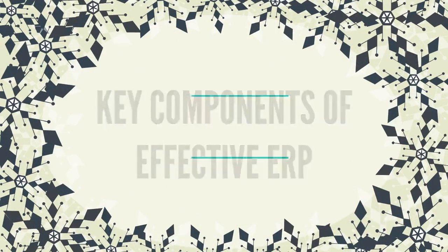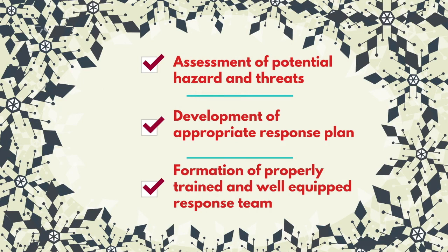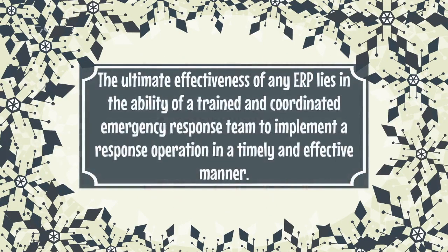The first key component of an emergency response plan is the assessment of potential hazards and threats. Secondly, the development of an appropriate response plan. Next is the formation of a properly trained and well-equipped response team. The ultimate effectiveness of any emergency response plan lies in the ability of a trained and coordinated emergency response team to implement the response operation in a timely and effective manner.